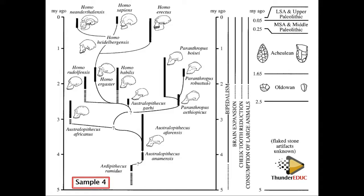For Homo ergaster and Paranthropus robustus, trace back the same way — they converge at the same level. For Homo erectus and Homo neanderthalensis, trace back further — Homo ergaster is the common ancestor for Homo erectus and the Neanderthals.